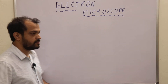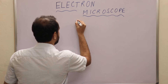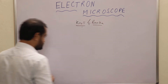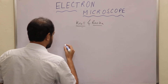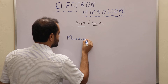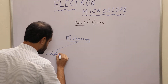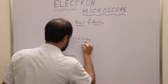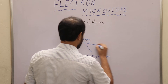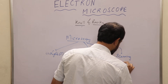Today we will be discussing electron microscopes. Now, electron microscopes were actually discovered by Nolan Rasca. We have discussed that there are basically three types of microscopy: number one, light microscopy; number two, electron microscopy; and number three, scanning probe microscopy.